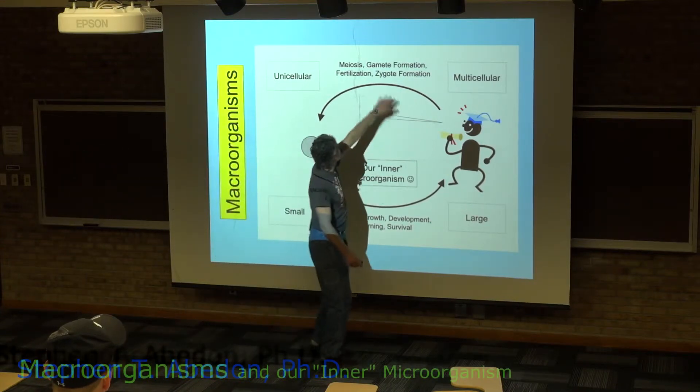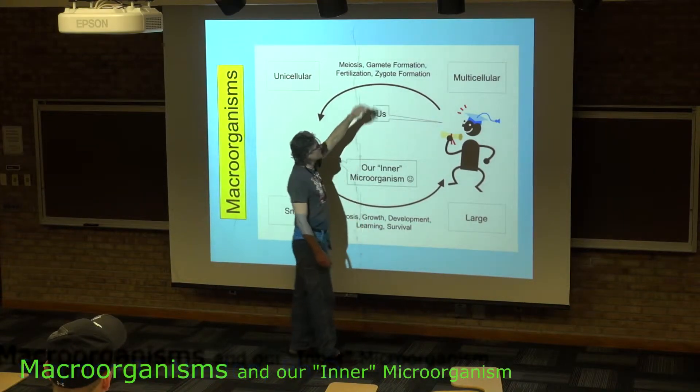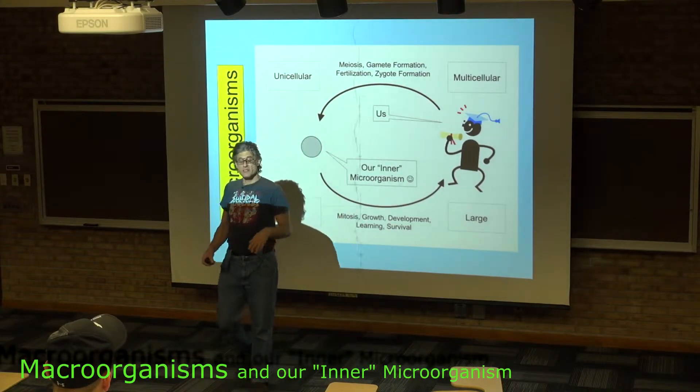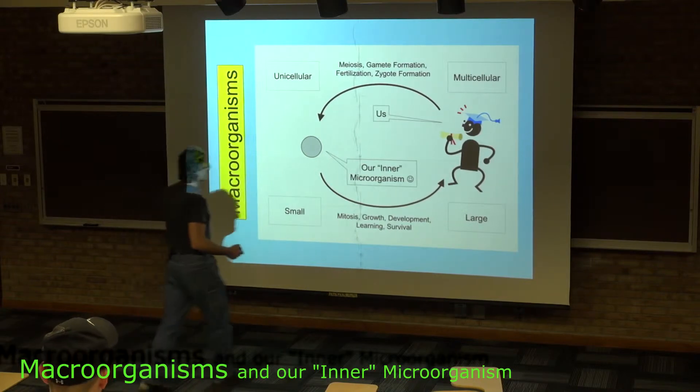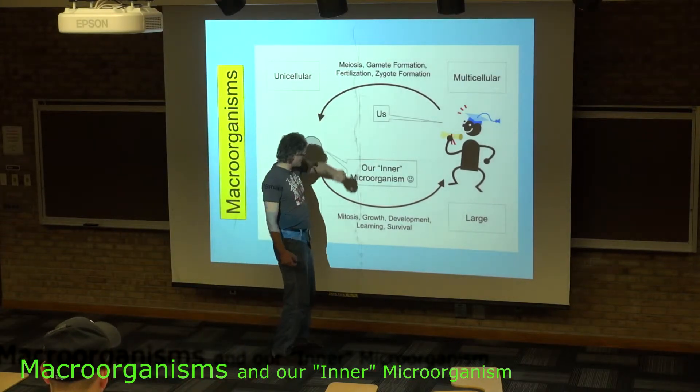This is all about meiosis, gamete formation, fertilization, zygote formation. You also have spore formation, which is another product or potential product of meiosis.